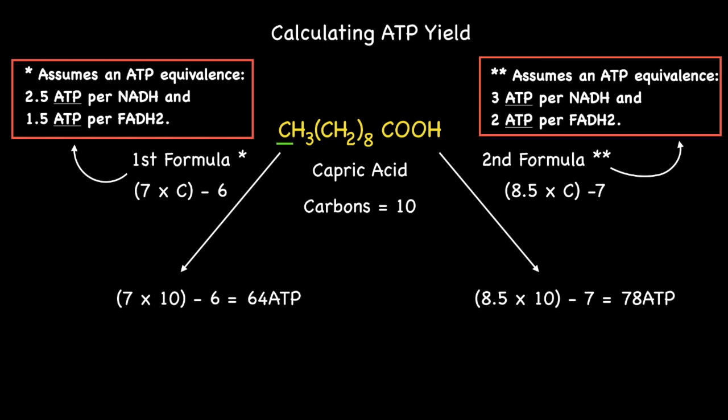We have one carbon from the CH3, eight carbons from the eight CH2 units within the brackets, and finally one carbon from the COOH functional group. This gives a total of 10 carbons.